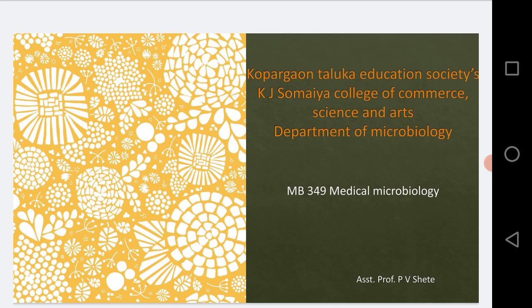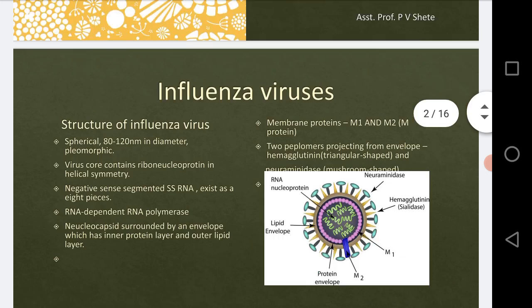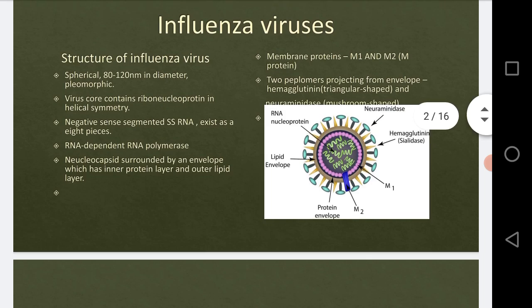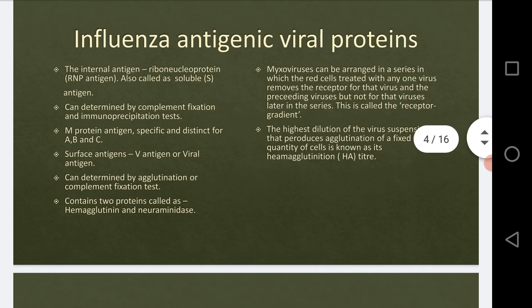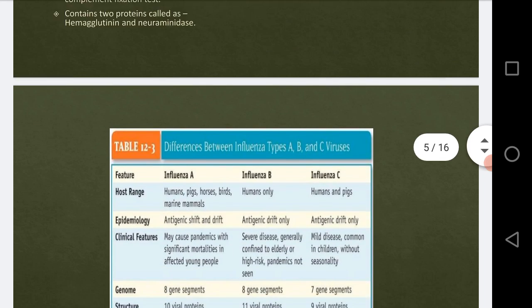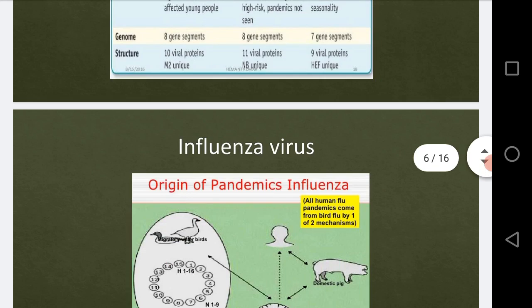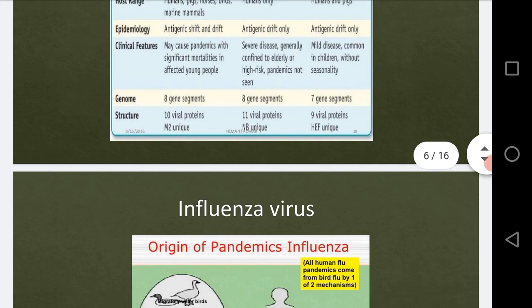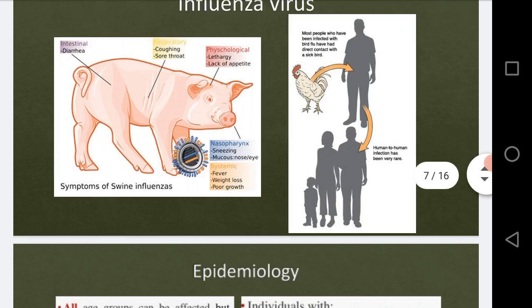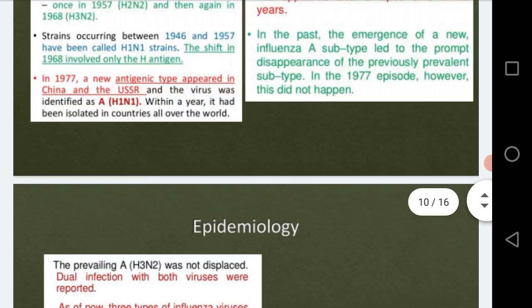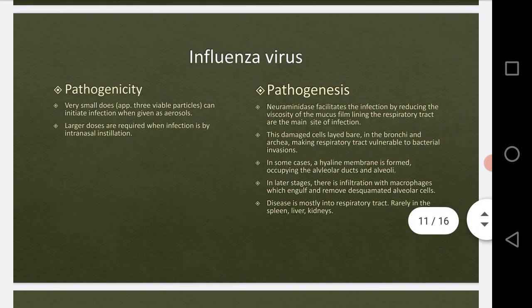Hello everyone, I am Assistant Professor Pragati Shetty from the Department of Microbiology, KJ Somaiya College. In the last online lecture we covered the laboratory diagnosis of the influenza virus. We started with the structure of the influenza virus, then the antigenic viral proteins, then the three types of the virus — A, B, and C — and then the epidemiology and pathogenesis of the virus.